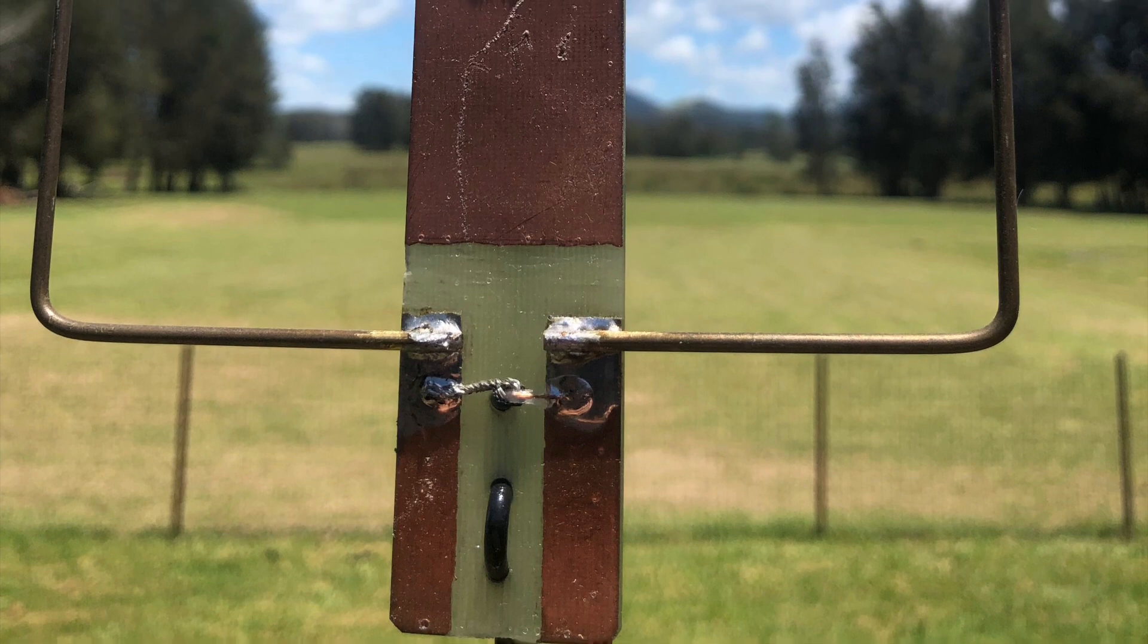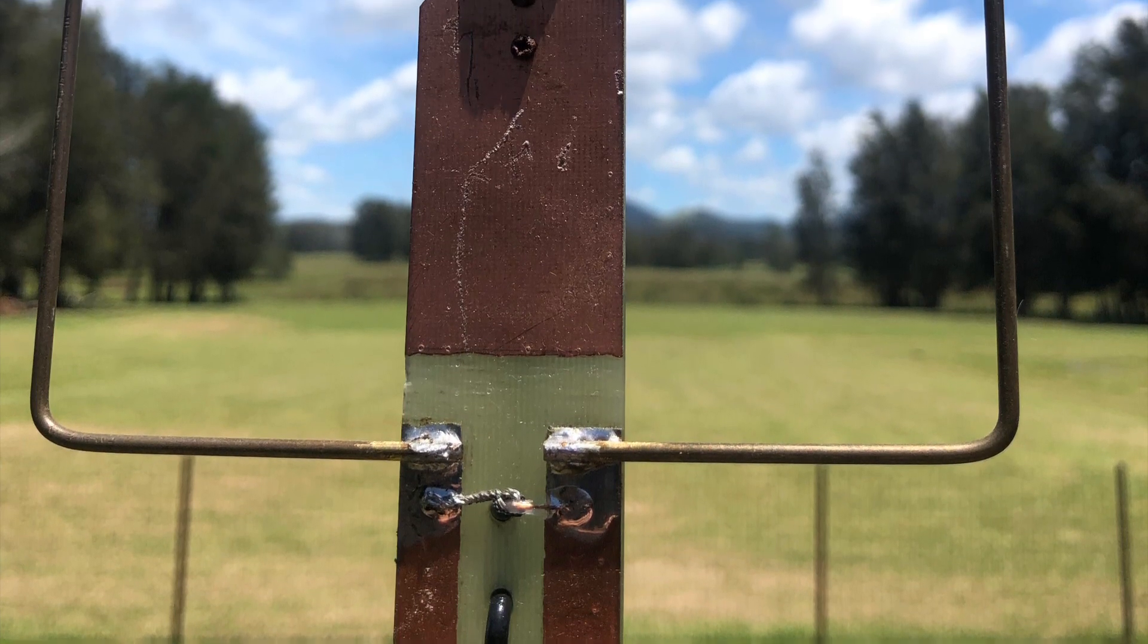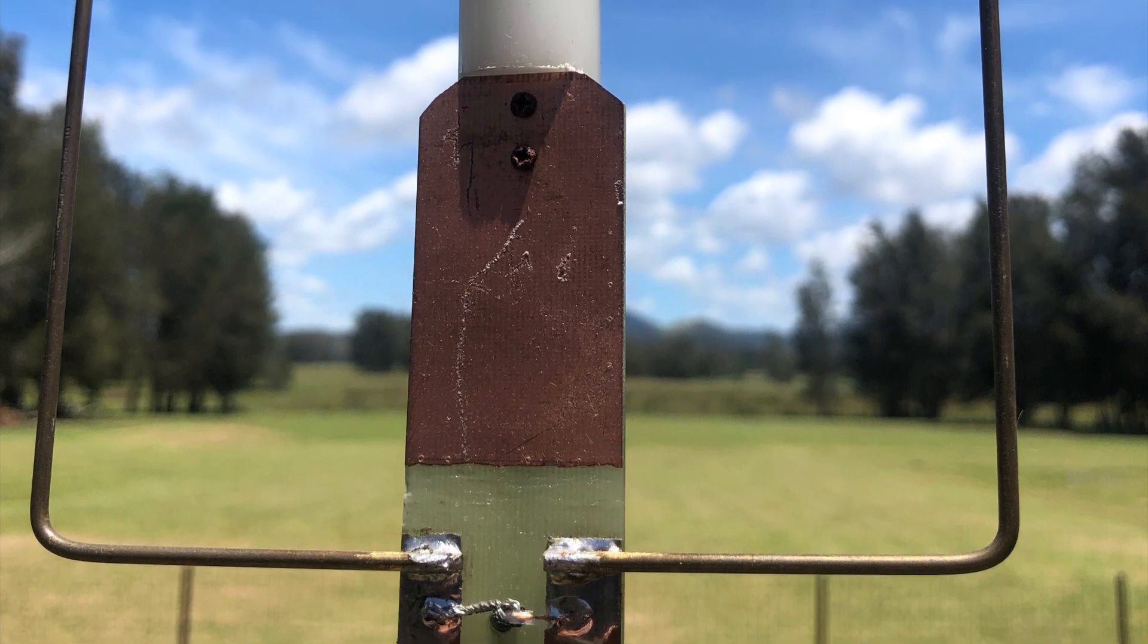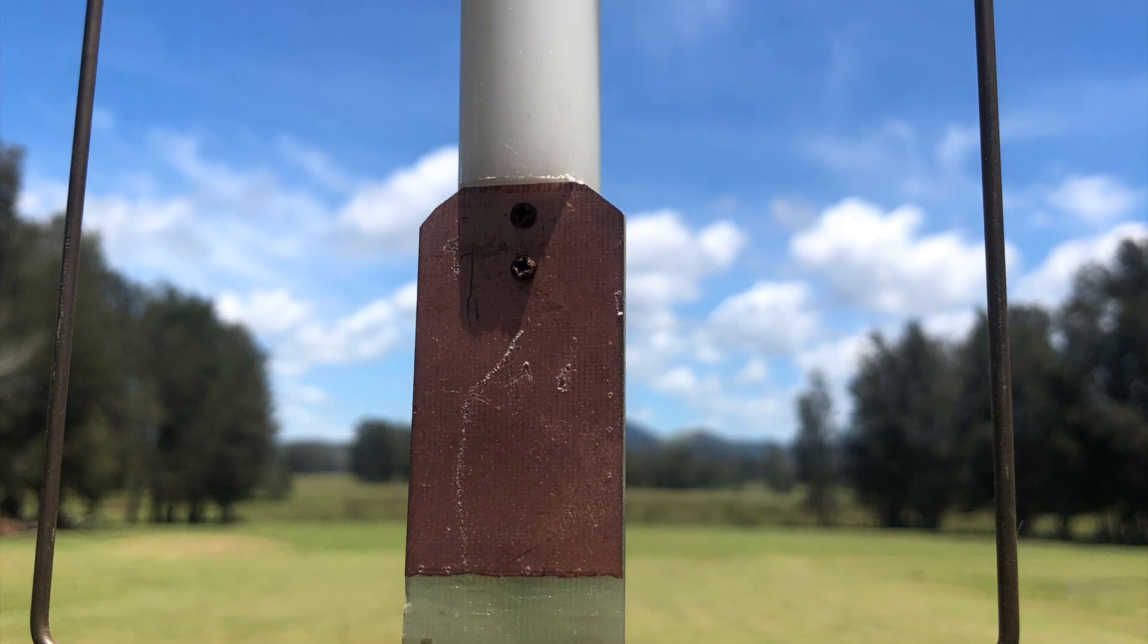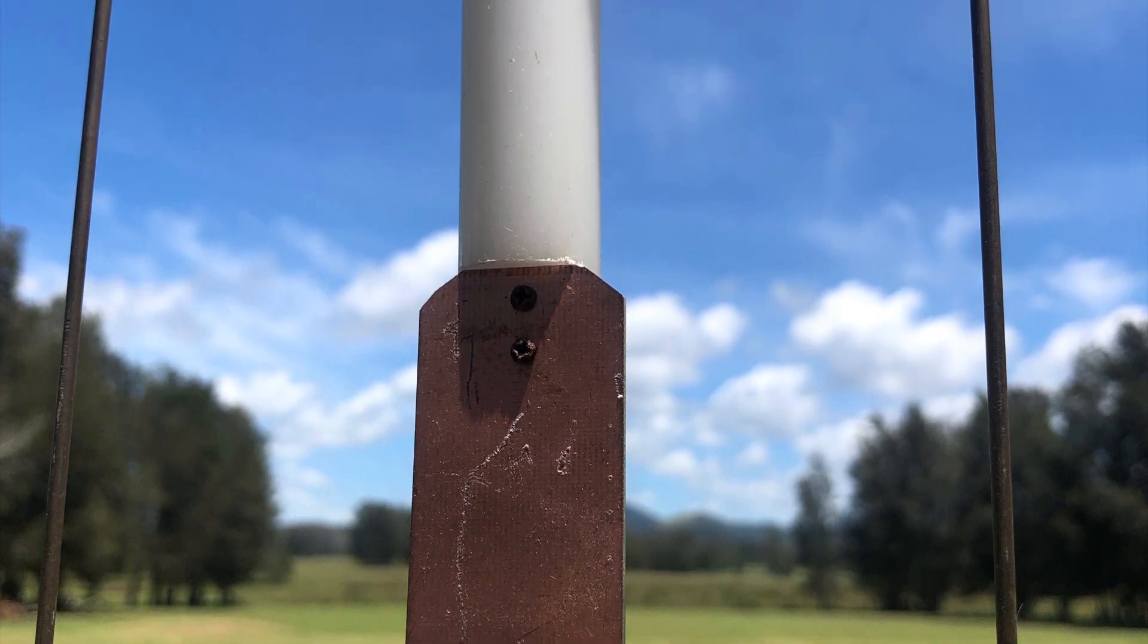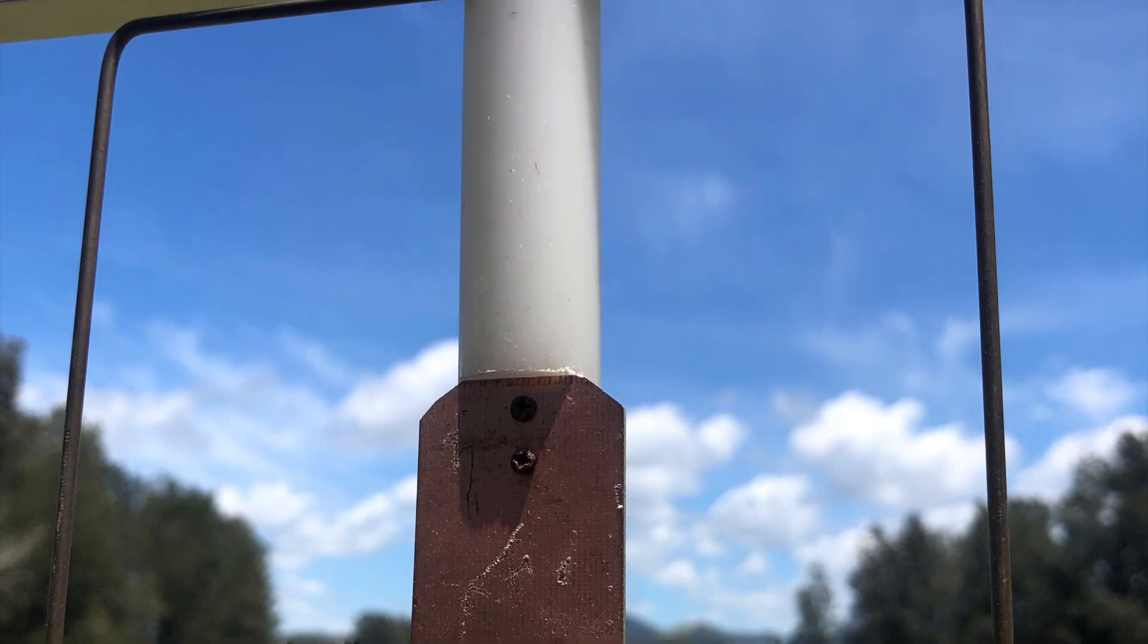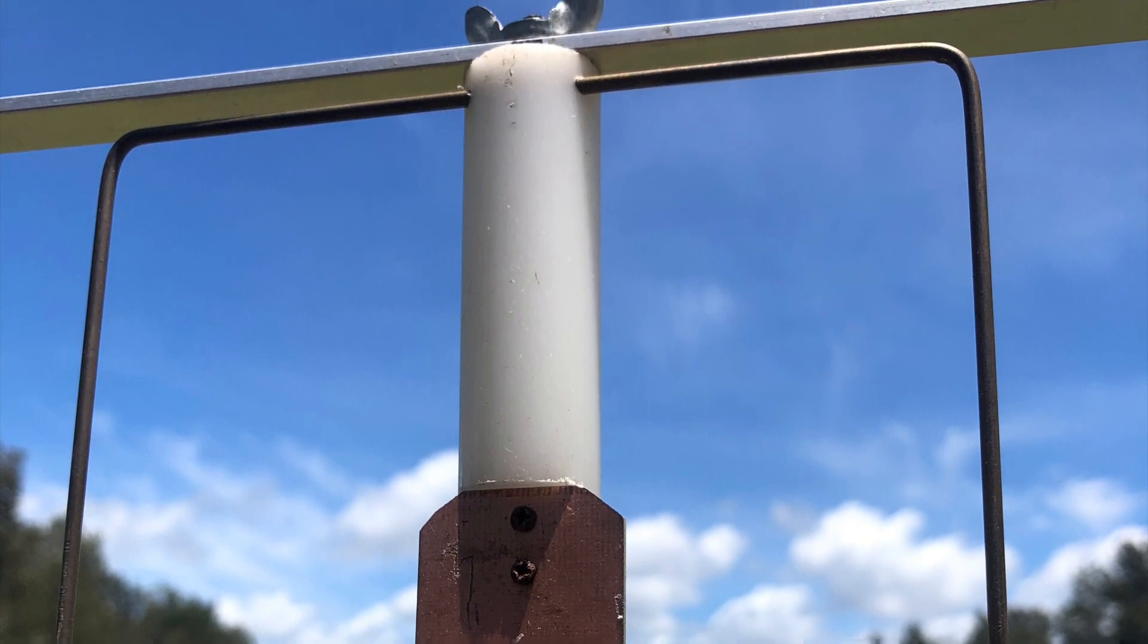This is the feed loop for my magnetic loop. It's made out of a piece of brazing rod. The rule of thumb is to make the feed loop about one fifth the dimension of the main loop. So in this case it's about 13 centimeters on an edge for the feed loop. And it's fed with coax and a piece of printed circuit board just fed directly at either end of the loop.